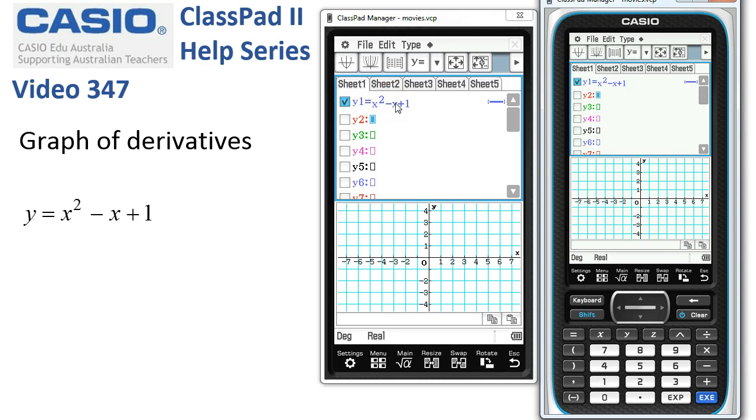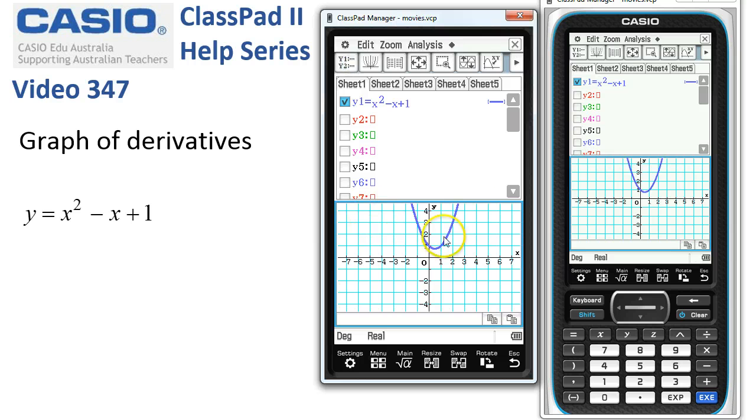And tap Execute to lock it in and select it. Now, that's going to give us, let's just check, there it is, the graph of the original parabola.